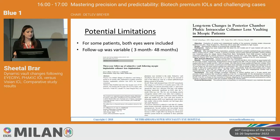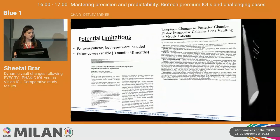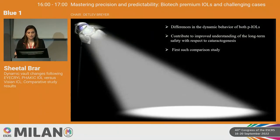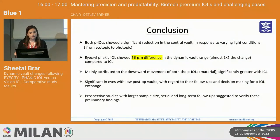Since vault can change with time, it may be better to study this through a prospective comparison study evaluating changes at different time periods with a longer follow-up of one to two years. However, to my knowledge, this is the first comparison study that throws light on the differences in how two different types of lenses behave under different light conditions, and also contributes to improved understanding of the long-term safety with respect to cataractogenesis in these cases.